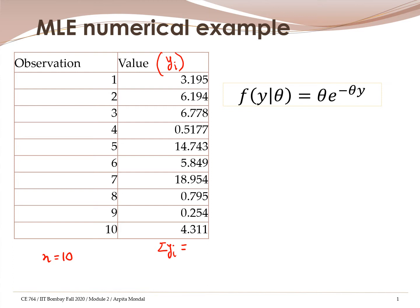Let us assume the functional form given by this expression. This distribution is called the exponential distribution, which is characterized by one single parameter theta. Note that you may not come across exactly the same form of exponential distribution in some textbooks — that could be because sometimes theta is written as a reciprocal of theta, in which case it's just a different parameter being estimated. Here in this example, we stick to this form of the exponential distribution.